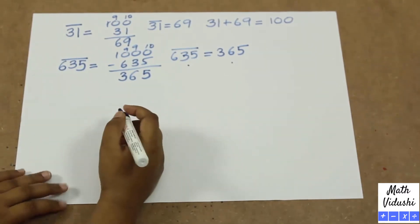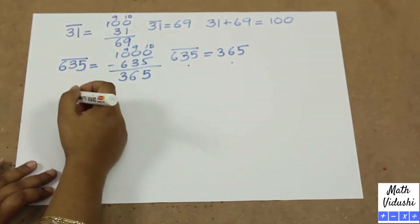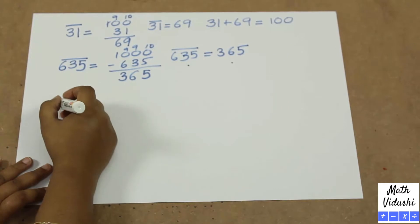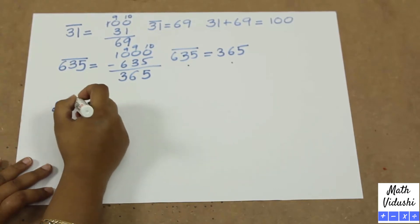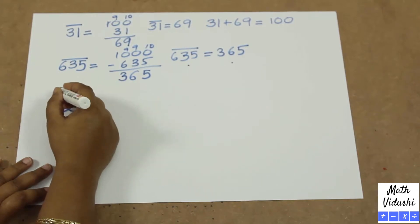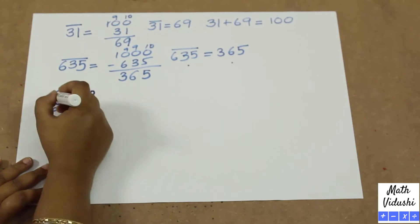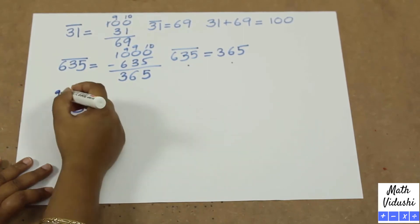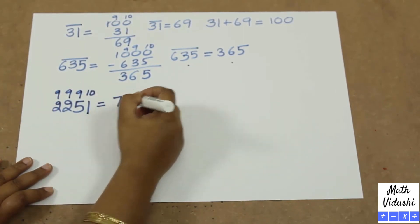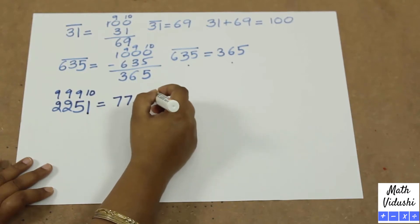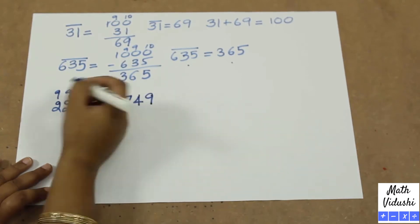We will look at more examples. What is the complement or Nikhilam for 2251? We will do all from 9 and last from 10. You will get 7749. This is the complement for 2251.